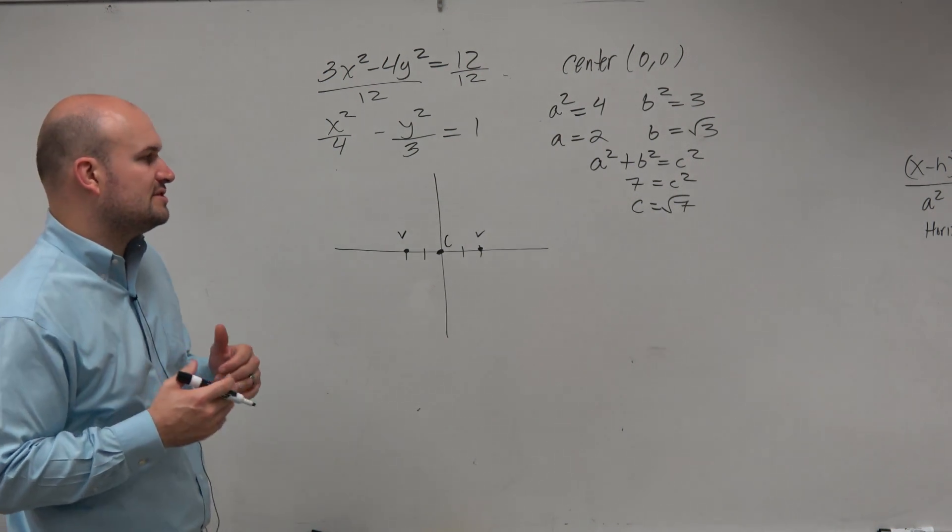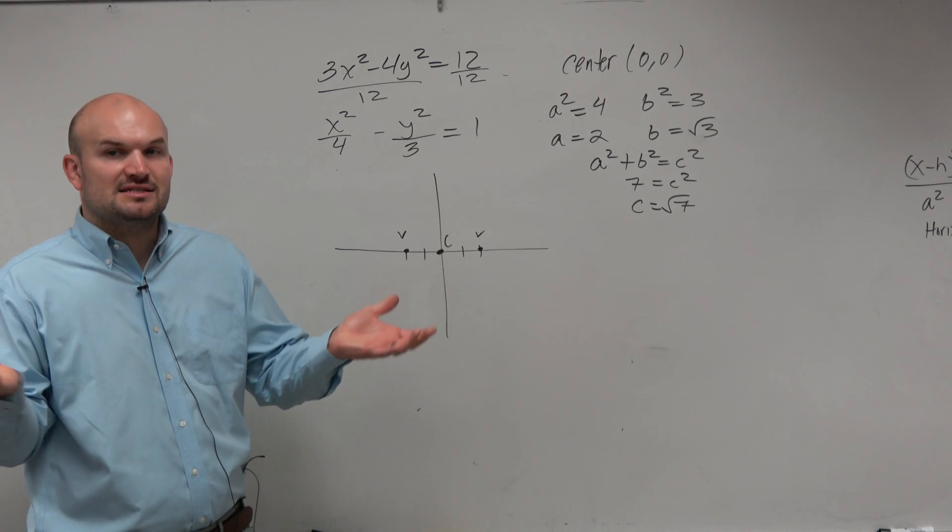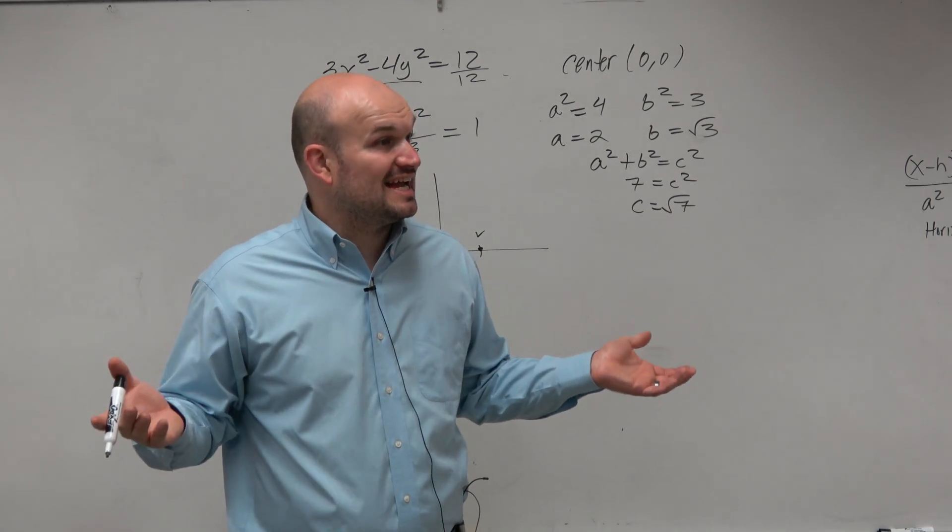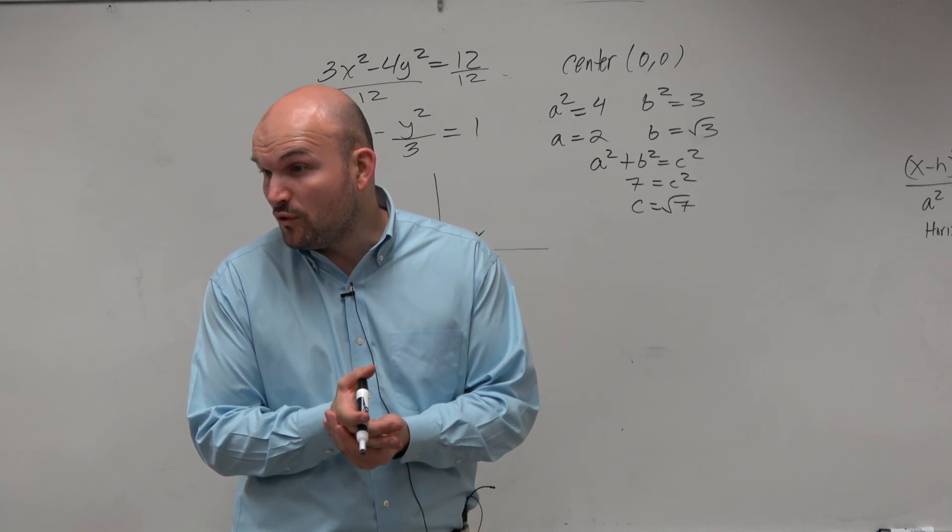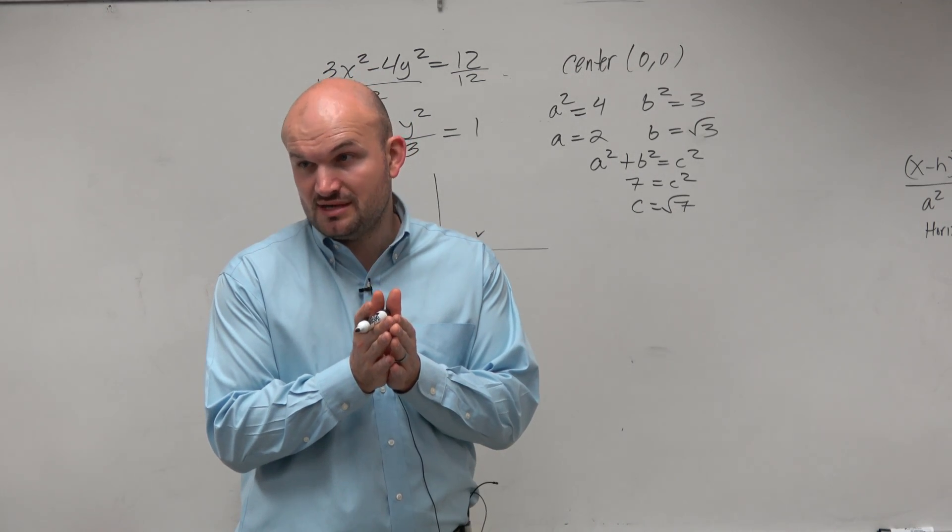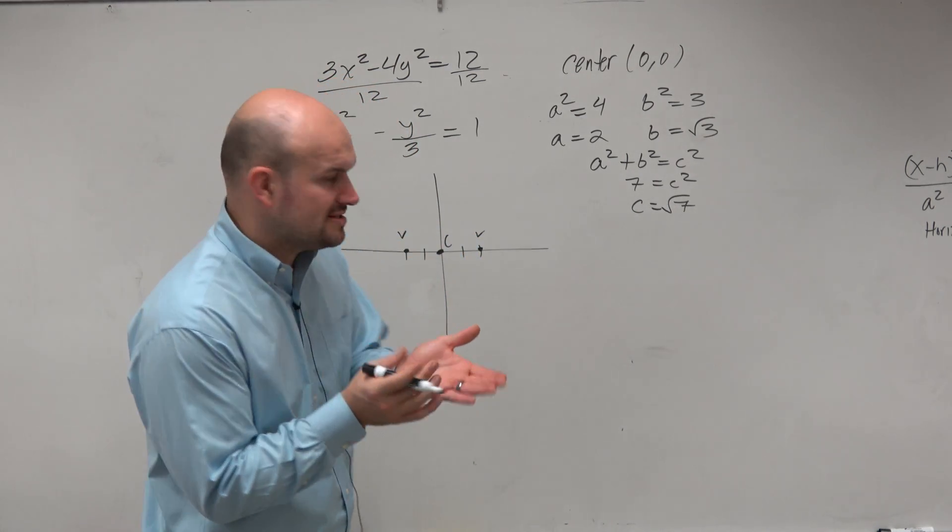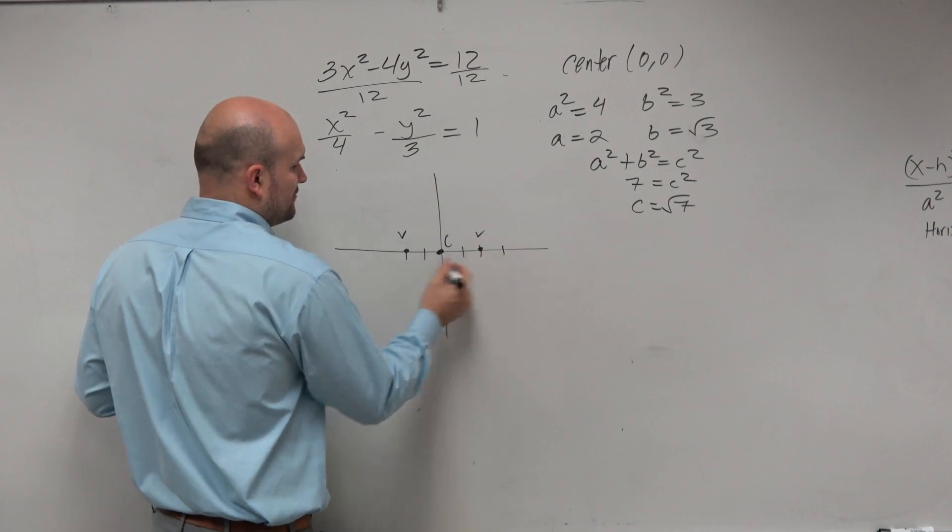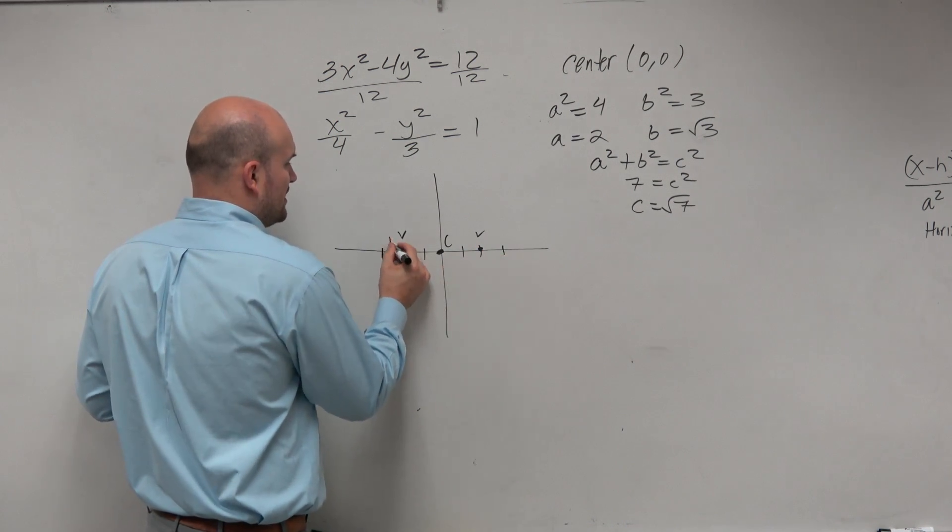My foci is going to be square root of 7. And again, just estimate the square root of 9 is 3. The square root of 4 is 2. So the square root of 7 is going to be somewhere between 2 and 3. Well, does that make sense for like a rough estimate? So here's 2. So therefore, that'd be 3. So let's just call the foci there.